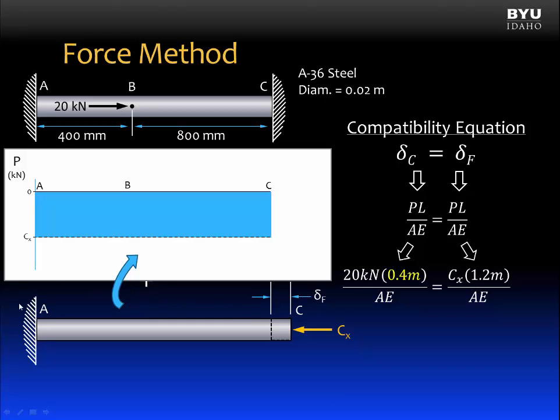For delta F, we are looking at this part of the problem down here in this diagram. If we were to plot the internal axial load P, it would be a force of Cx from A all the way to C. And Cx is compression, so that's shown here as a compression force and constant from A to C. Now we will fill in the equation.